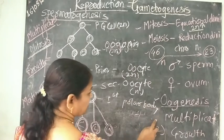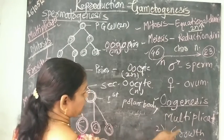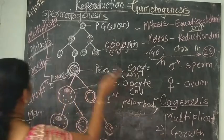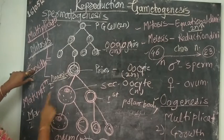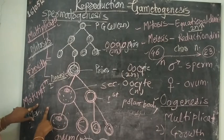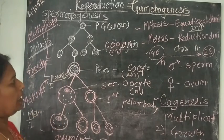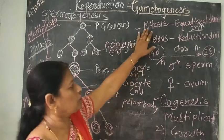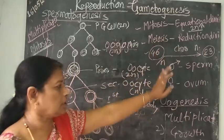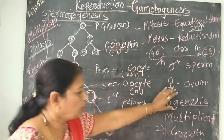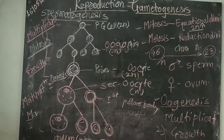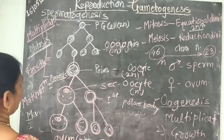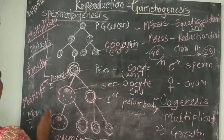The phases are the same for both processes: multiplication, growth, and maturation. With the help of mitosis and meiosis, both oogenesis and spermatogenesis processes are completed.